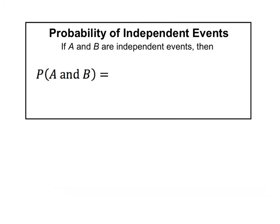Now that we know what independent events are — events where one event happening does not affect the probability of the next — if A and B are independent events, you calculate the probability of A and B by taking the probability of A times the probability of B. Notice this uses the word 'and,' and with 'and' you multiply. Remember, with 'or' we added; with 'and' we multiply.